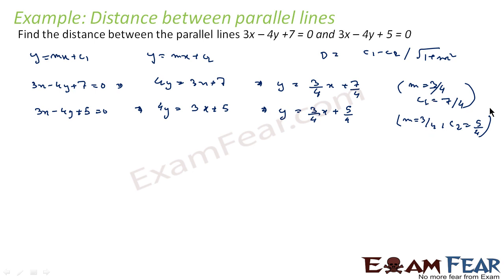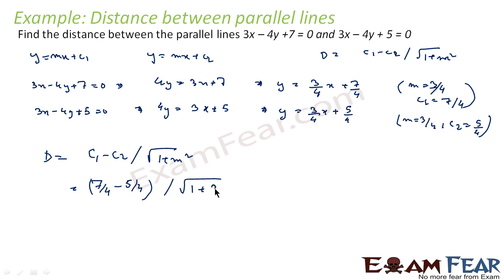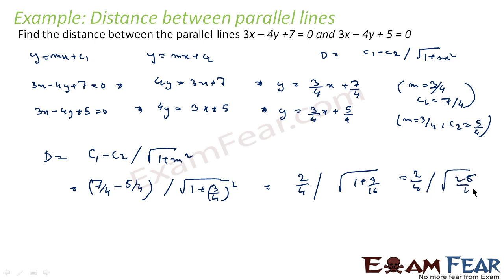Now we have m, c1, and c2. Using the formula d = |c1 − c2| / √(1 + m²), this becomes |7/4 − 5/4| / √(1 + (3/4)²) = (2/4) / √(1 + 9/16) = (2/4) / √(25/16) = (2/4) / (5/4) = 2/5. That is our answer.